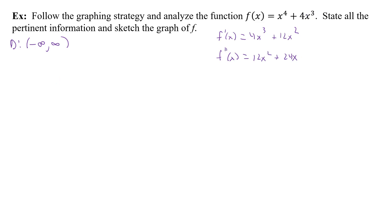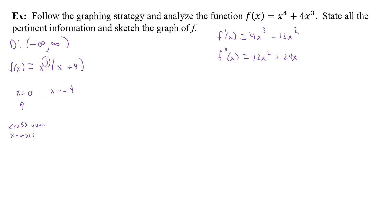Now we need to do some factoring. For f(x), we can factor out x³ to get x³(x + 4). Setting each factor equal to zero gives x = 0 and x = -4. Both are odd-multiplicity roots, so the graph crosses over the x-axis at both points.